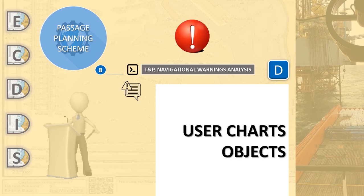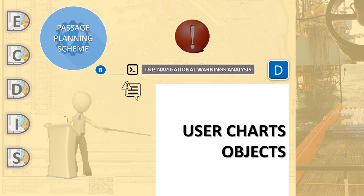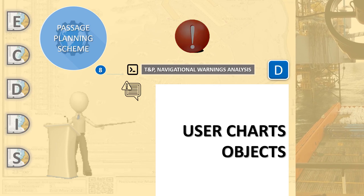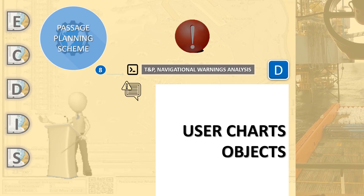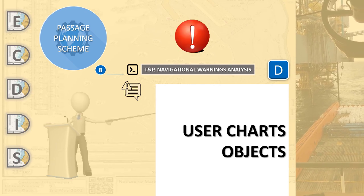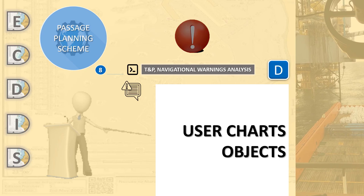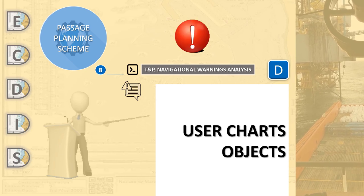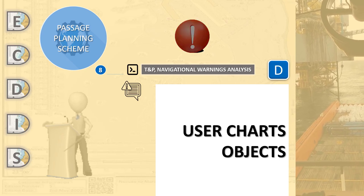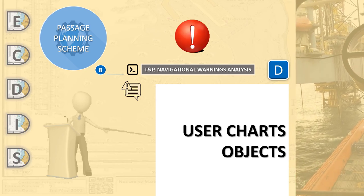Creating two layers — one for objects relevant to navigation and one for radio communication — is one of the relevant examples in industry. You can call user chart layers something like 'navigational objects layer' and 'pilot and radio information layer.'